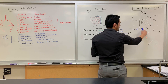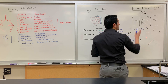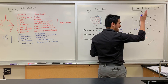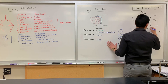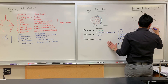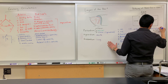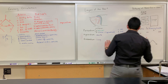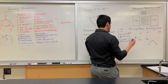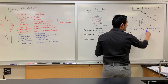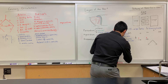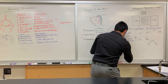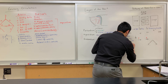Once we get to the right ventricle, we need to get the blood to the lungs. It travels through the pulmonary trunk, passing through another valve called the pulmonary semilunar valve going from the ventricle to the trunk.